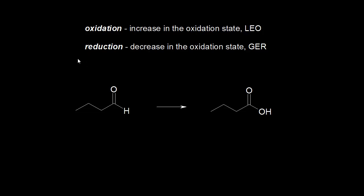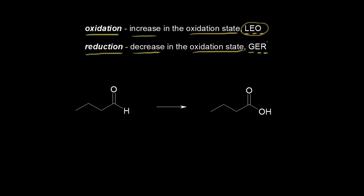Now that we know how to assign oxidation states to carbon, let's look at some organic redox reactions. Remember these definitions from general chemistry: oxidation involves an increase in the oxidation state, and reduction involves a decrease in the oxidation state. You might also remember that loss of electrons is oxidation and gain of electrons is reduction. 'LEO the lion goes GER' is a good way to remember that.